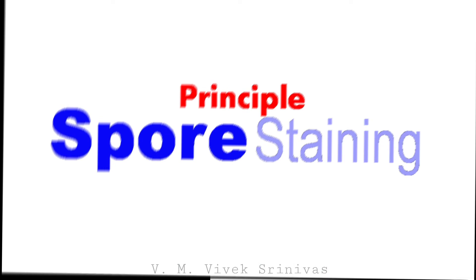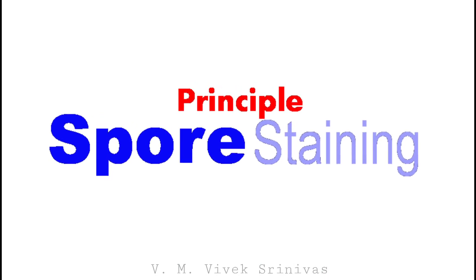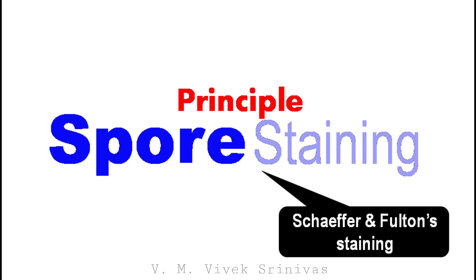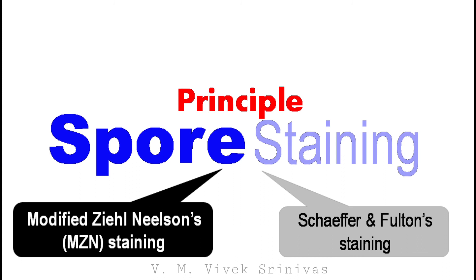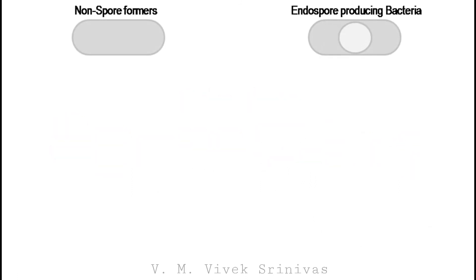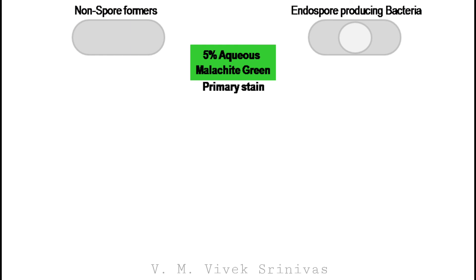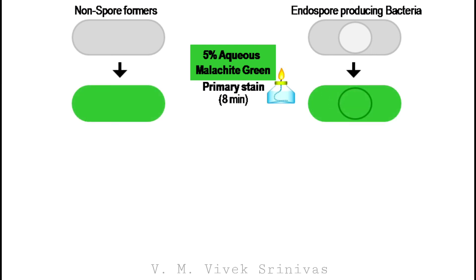Coming to the principle behind the spore staining technique, it is done by the Schaefer and Fulton's staining technique, also sometimes called the modified Ziehl-Neelsen technique — that is, it is a modified version of the Ziehl-Neelsen acid-fast staining method. Once the bacteria are treated with 5% aqueous malachite green staining solution, which is the primary stain used here, along with heat treatment, it gives green color to both bacteria.